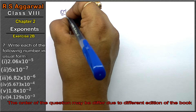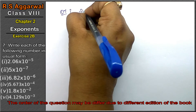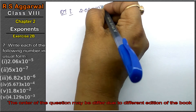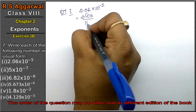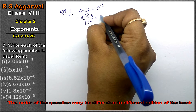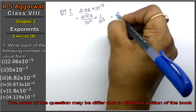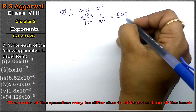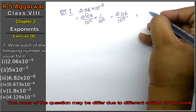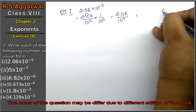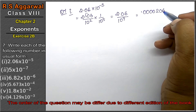Let's do question number seven of Exercise 2B, Exponents. Write each of the following numbers in usual form. First part: 2.06 × 10⁻⁵. We have 2.06, and moving the decimal we get 206 upon 10 to the power 7 — that means after 7 digits, placing the point gives us 0.0000206. That is the answer.